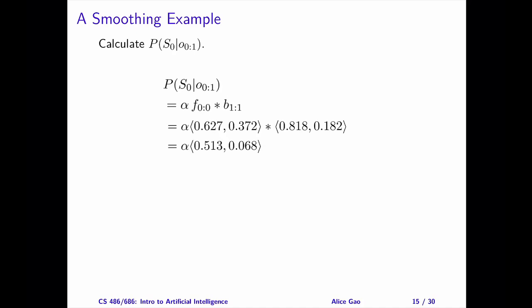We need to multiply the forward recursion message and the backward recursion message together. This is an element-wise multiplication again. The final step is to normalize the product. Here's our final answer.